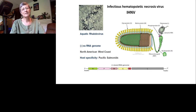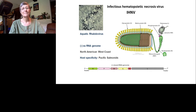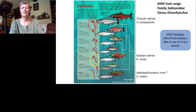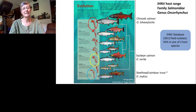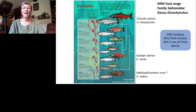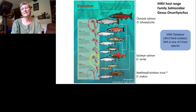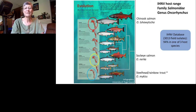IHNV is originally endemic to the North American west coast and has host specificity for Pacific salmonid fish. IHN infects only fish in the family Salmonidae. There are many different species, with about six million years of divergence between them. We do extensive genetic typing of field isolates — with a database of over 3,000 isolates — and find that 94% of them come from one of three hosts.